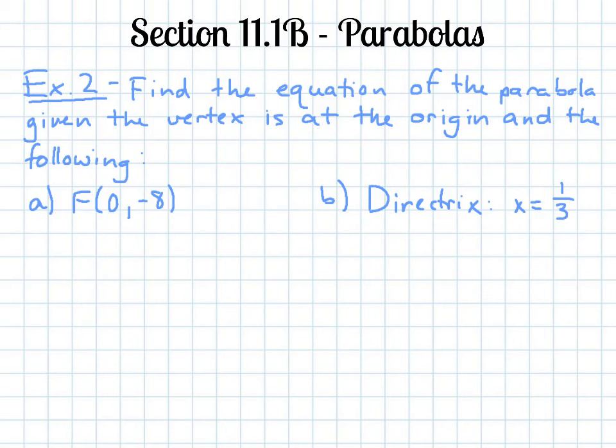So we're going to find an equation of a parabola given the vertex is at the origin. Remember that it's always 0, 0. And then given the following. So letter A we're given that the focus is 0, negative 8.